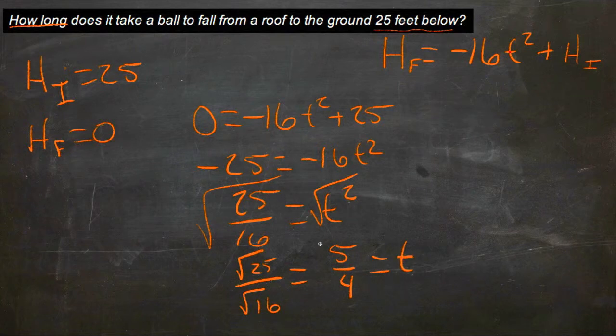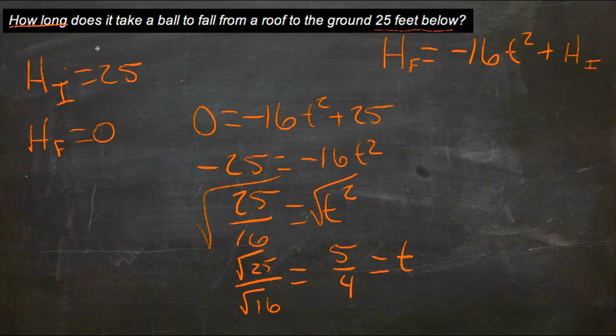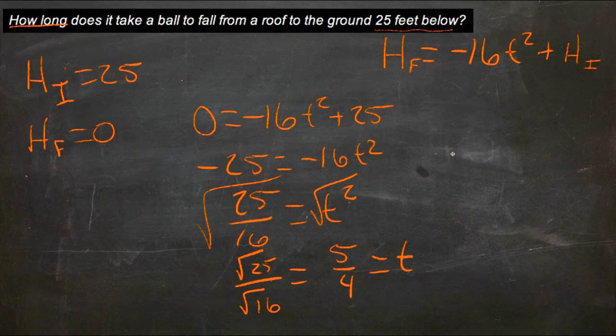So that means that it takes 5 fourths, or 1 and 1 quarter seconds, for a ball to fall from the roof to the ground if the ground is 25 feet below. So t equals 1 and 1 quarter.